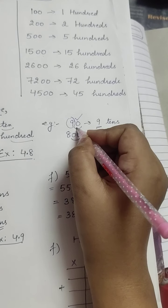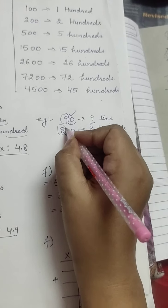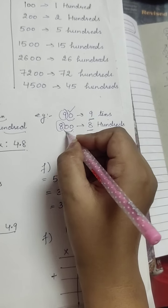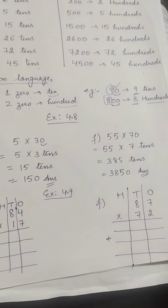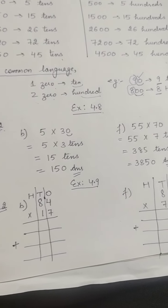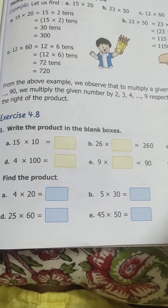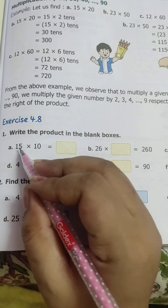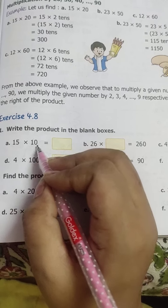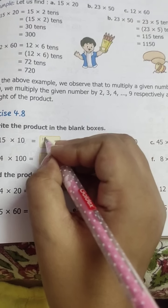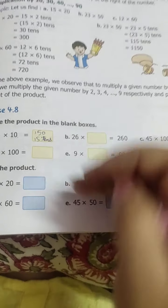For example, 90 has one zero, so the initial number 9 remains the same and you write 9 tens. For 800, the 8 remains the same and you write 8 hundreds. I hope that is clear. Now Exercise 4.8: 15×10 — when 15 is multiplied by 10, the answer is 150, or 15 tens. You can write it either way.